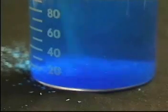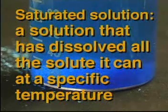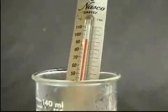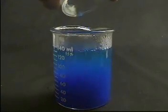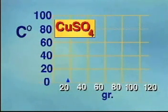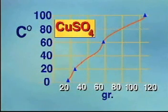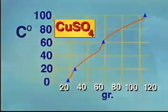Here, the solution is said to be saturated. A saturated solution is a solution that has dissolved all the solute it can at a specific temperature. If the temperature is raised to over 90 degrees centigrade, then as much as 100 grams of copper sulfate can be dissolved. This graph shows the relationship between temperature and the solubility of copper sulfate (CuSO4). As the temperature of the solvent increases, the solubility increases. Any solution above the line in the graph is saturated, and any solution below the line is unsaturated. But the opposite is true with gases dissolved in water: as the temperature of the solvent increases, the solubility of the gas decreases.